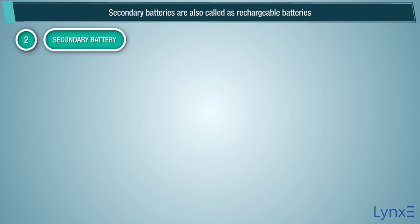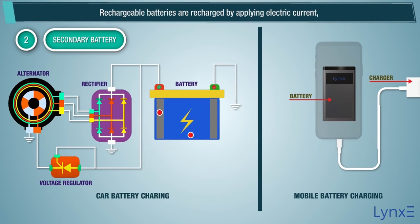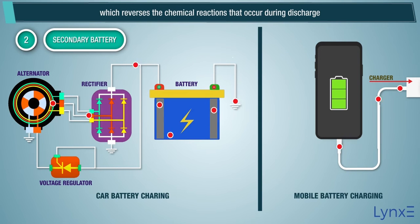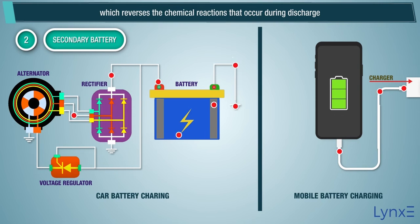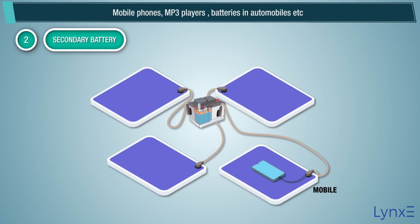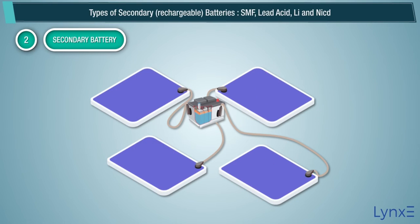Secondary batteries are also called rechargeable batteries. Rechargeable batteries are recharged by applying electric current, which reverses the chemical reactions that occur during discharge. Some examples of rechargeable batteries are the batteries used in mobile phones, MP3 players, laptops, and batteries in automobiles. Types of secondary rechargeable batteries include the following.